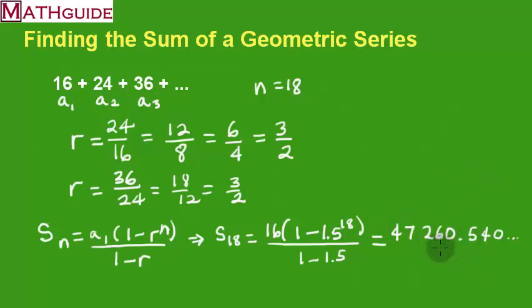If I were to round it to the nearest tenth, it looks like it would be a half. So approximately 47260.5 as an approximate answer. That's how you find the sum of a geometric series.